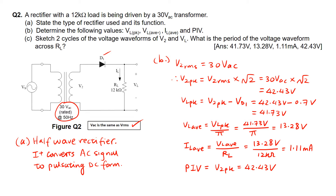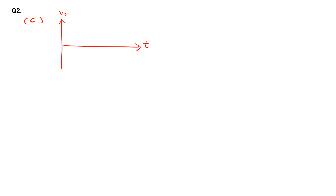For part C, we are to sketch two cycles of the voltage waveforms V2 and VL, and calculate the period of the voltage waveform across load resistor RL. The period equals 1/F, and this formula pertains to a half-wave rectifier. Taking 1 over 50 Hz — the frequency given in the question — gives us a period of 20 milliseconds.